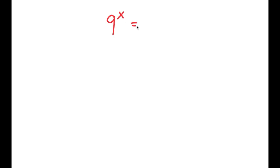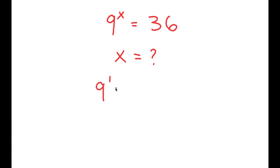In this equation, I'm going to be solving 9 to the power of x is equal to 36. My variable is x, which is what I'm solving for. We can already tell that x is not going to be a whole number, because 9 to the power of 1 is 9, and 9 to the power of 2 is 81. So we know that x is going to be somewhere in between 1 and 2.